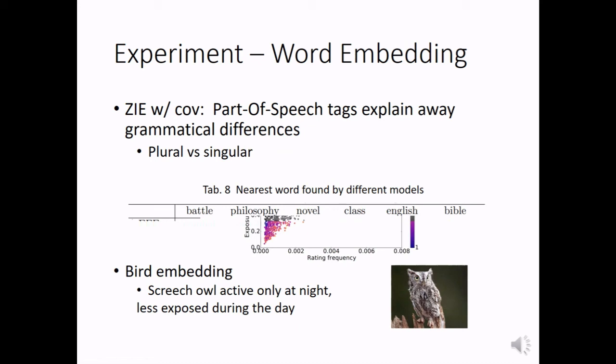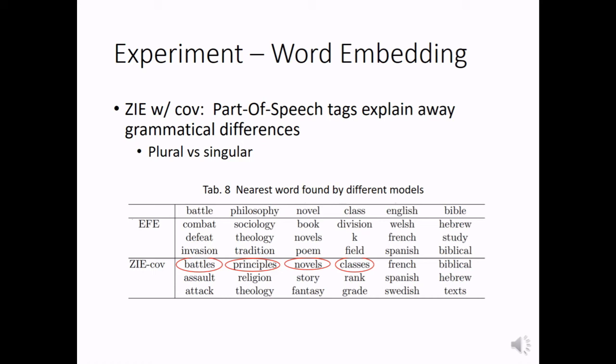The last experiment is word embedding. In this experiment, we use part-of-speech tags as the covariates to fit the exposure probability. We found out that part-of-speech tags explain away some grammatical differences between words. For example, plural versus singular.